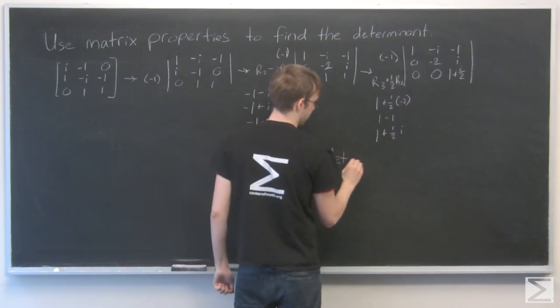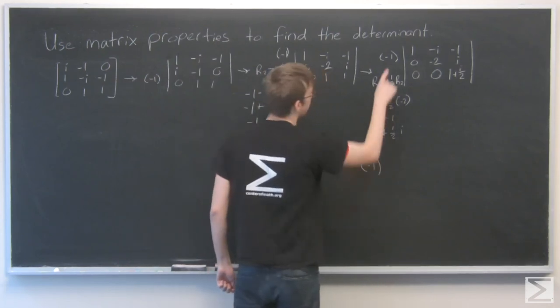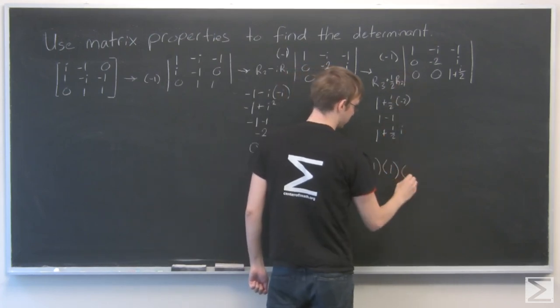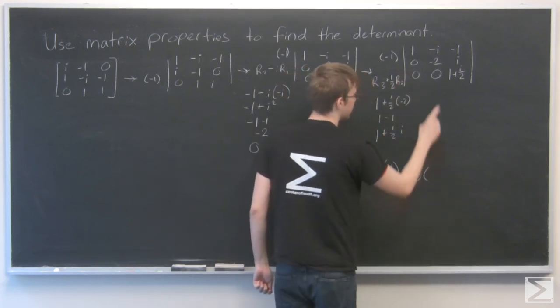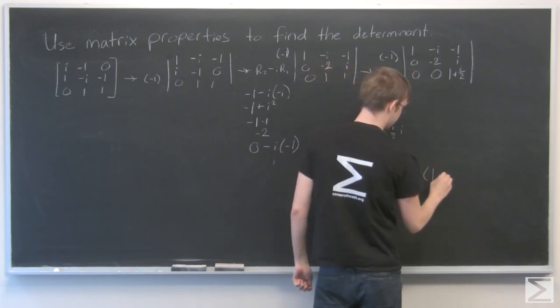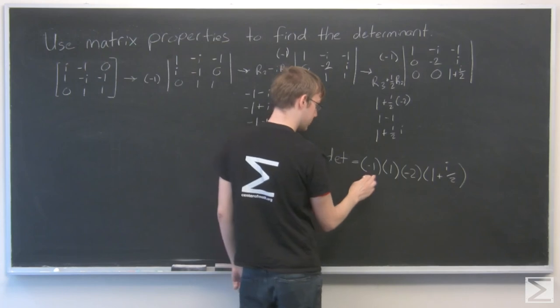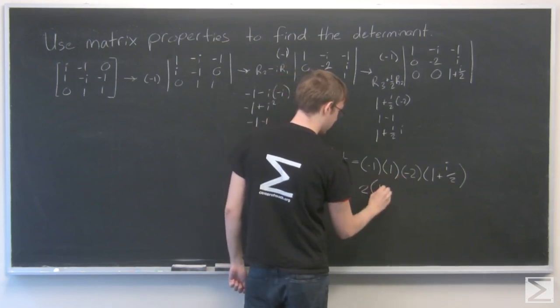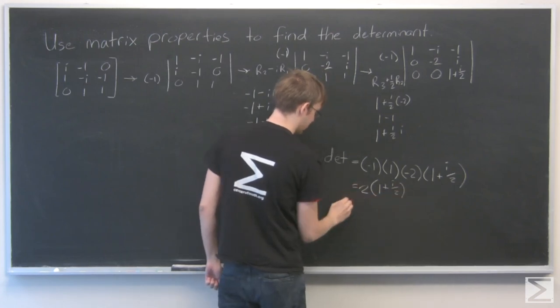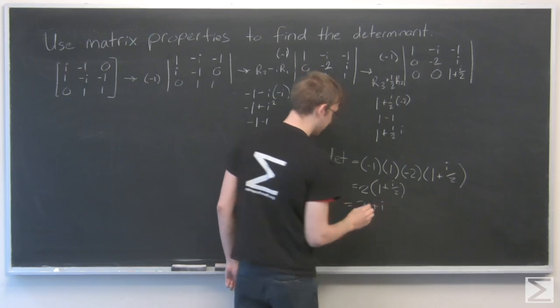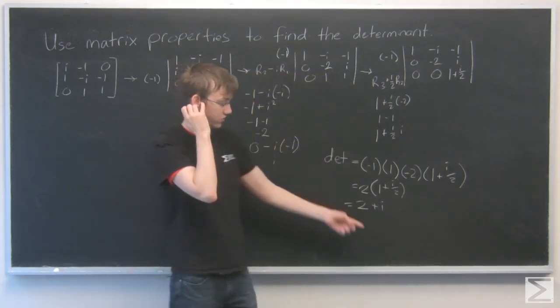So the determinant is going to be negative one, that one, times one, times minus two, times one plus i over two. Minus one times minus two becomes just two times one plus i over two, which is equal to two plus i. So our determinant is two plus i.